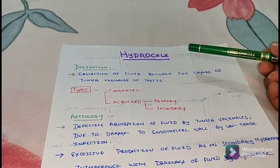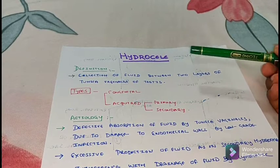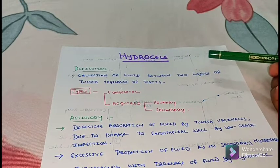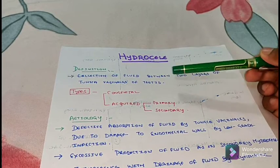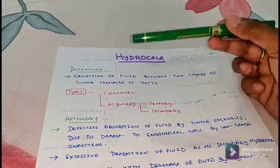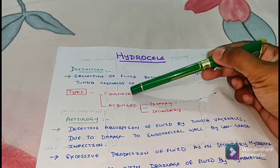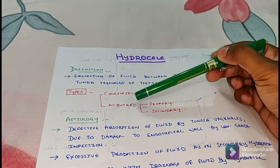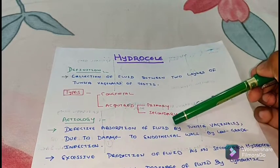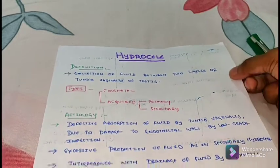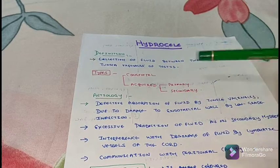Hydrocele is a collection of fluid between the two layers of tunica vaginalis of the testes. The types of hydrocele: it may be congenital, or it may be acquired. Acquired hydrocele is classified as primary and secondary.